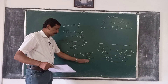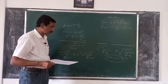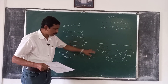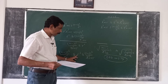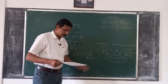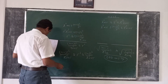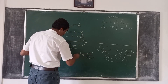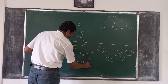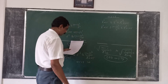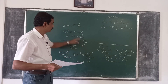So sigma-squared lies between (n minus 1) times s-squared divided by chi-square (0.975) and (n minus 1) times s-squared divided by chi-square (0.025). This is the 95 percent confidence interval for the population variance sigma-squared. If you take the square root of these quantities, it becomes sigma, giving you the 95 percent confidence interval for the standard deviation.